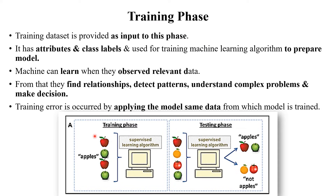The first phase is called the training phase. In the training dataset, we provide input to the machine. This input is in the format of an image and a label — this concept is used in supervised learning algorithms. We will learn about supervised and unsupervised algorithms in our next session. For training, we use particular attributes and their class labels as input. Here the attributes are images of apples and the label is 'apple'.